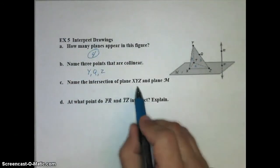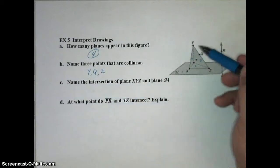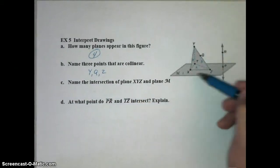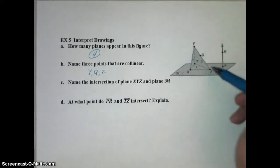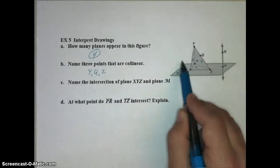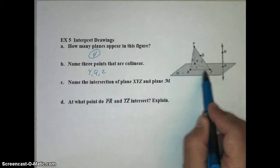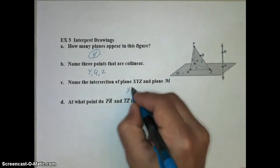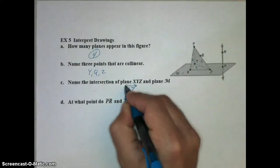Let's name the intersection of plane XYZ and plane M. XYZ is this front side of this triangular pyramid, and plane M is this paper. They intersect at line XZ. So I'm going to say they intersect at line XZ.